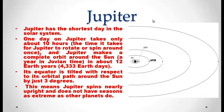Jupiter takes 12 Earth years to complete its orbital motion, approximately 4,333 Earth days. Its equator is tilted with respect to its orbital path around the sun by just 3 degrees. This means Jupiter does not have seasons as extreme as other planets. Jupiter spins nearly upright and does not have any extreme seasons.